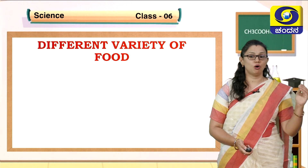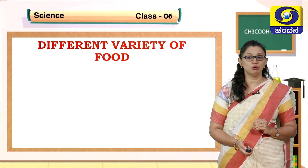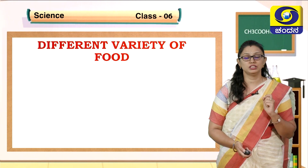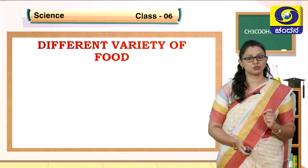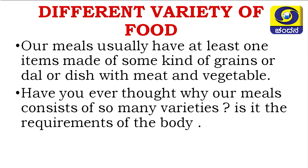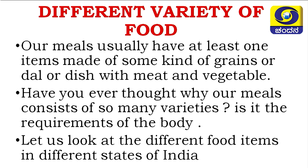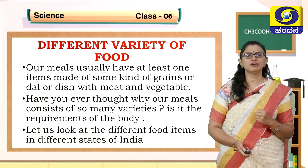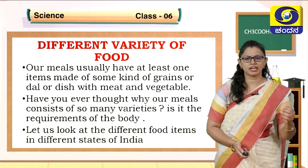As already discussed in the previous class, you will collect information about different food items in our different states of India. As you know, our meals usually have at least one item — some kind of grain or dal or dish with a meat type or vegetables. Have you ever thought why our meals consist of so many varieties? We have to think why we need different varieties of food in our meals, in our breakfast, and in our dinner.